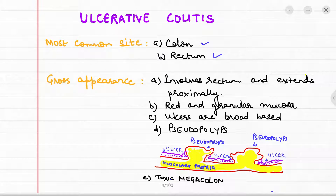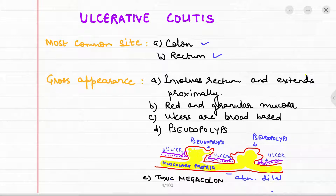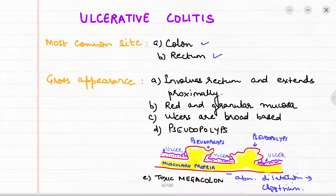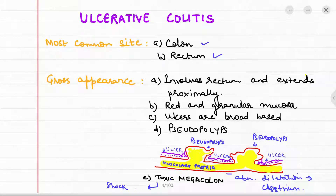Another very important feature of ulcerative colitis is toxic megacolon, which involves abnormal dilatation of the colon. This can be due to infections such as Clostridium, which can lead to shock. It is called 'toxic' because it can be fatal, and 'megacolon' because of the dilatation.